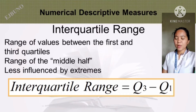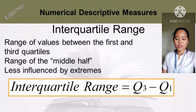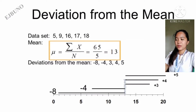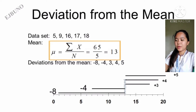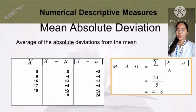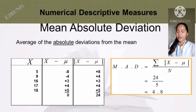Interquartile range is the range of values between the first and third quartiles — the range of the middle half, less influenced by extremes. The interquartile range equals Q3 minus Q1. Deviation from the mean — given data set: 5, 9, 16, 17, 18. The mean equals the summation of x over n equals 65 over 5, which equals 13. The deviations from the mean are negative 8, negative 4, 3, 4, and 5.